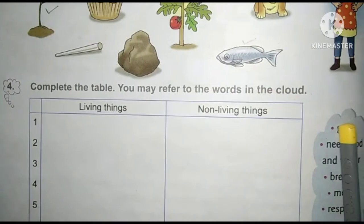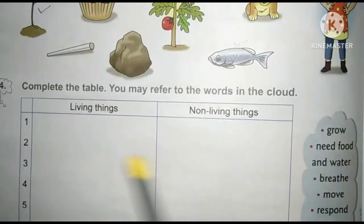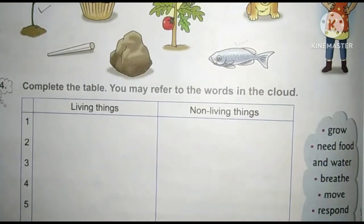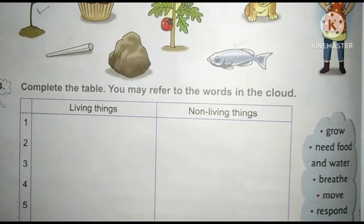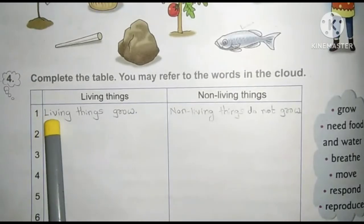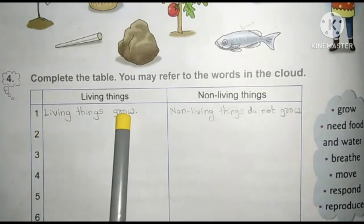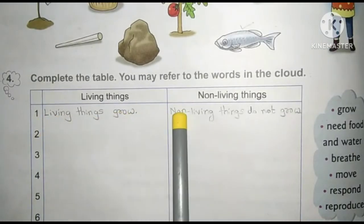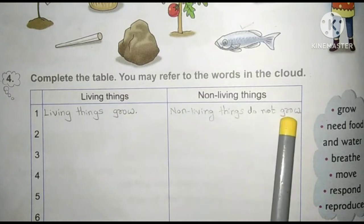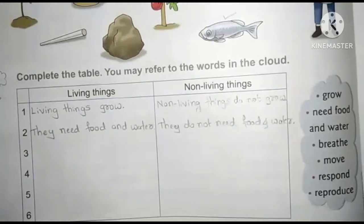Here, words are given. Using these words, you have to write the difference between living things and non-living things. First one: living things grow, non-living things do not grow.